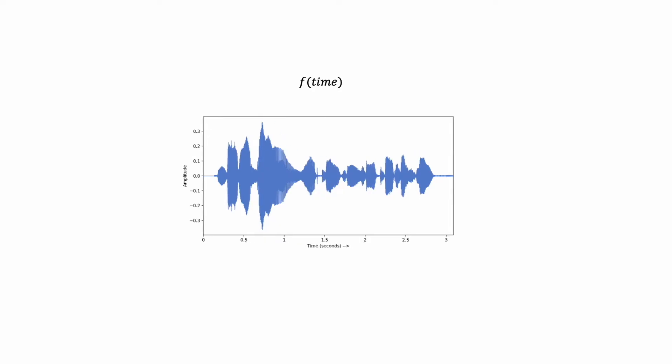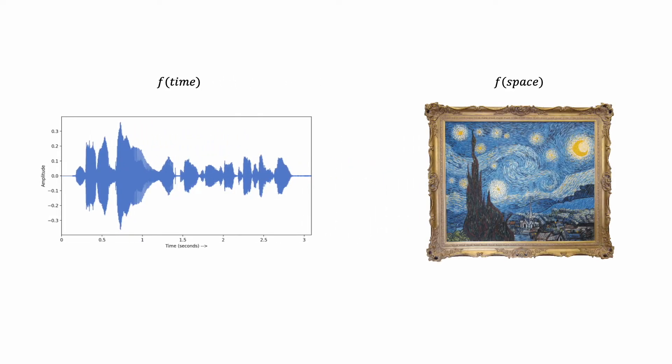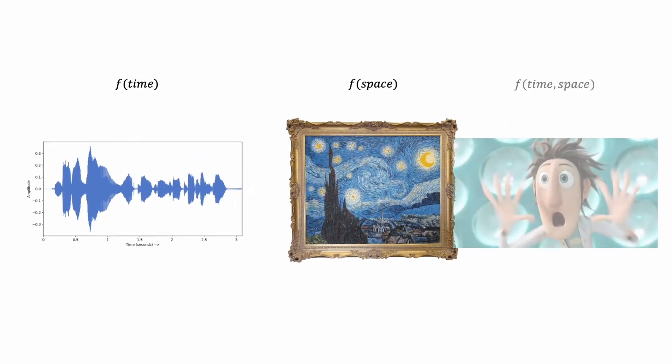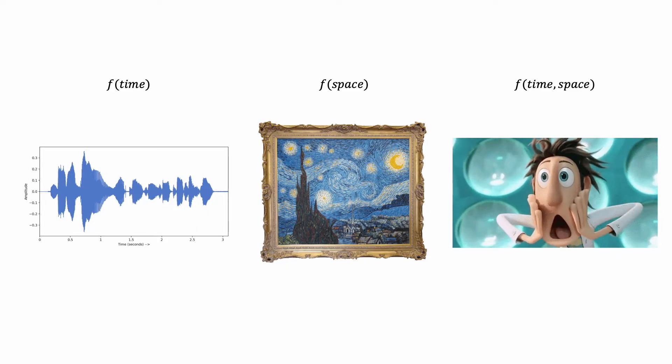For example, audio is a signal that varies over time. An image is a signal that varies over space. And a video, like this one, is a signal that varies over time and space.